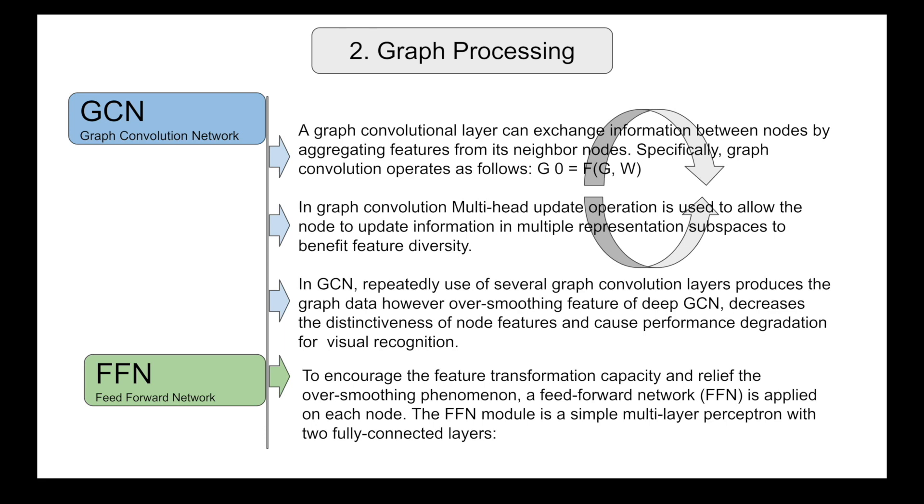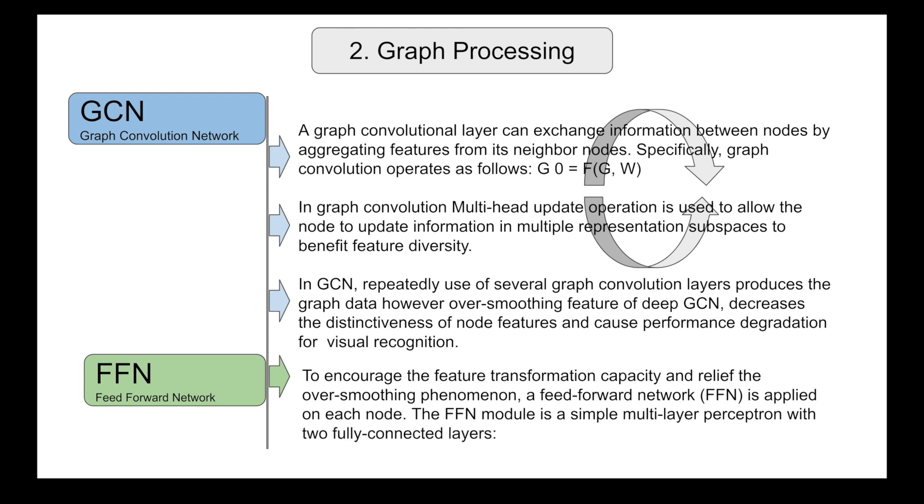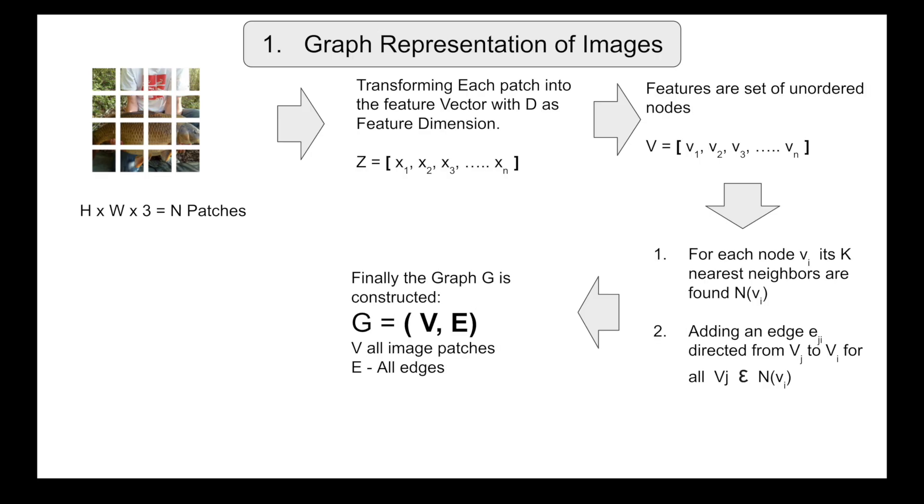But there is an after effect. The performance degradation for visual recognition, meaning the image may not be able to be recognized perfectly. To improve and overcome the over-smoothing problem which caused the performance degradation, and enhance the feature transformation capacity, a feed forward network is applied at each node level. So this feed forward module is just a simple multi-layer perceptron with two fully connected layers.